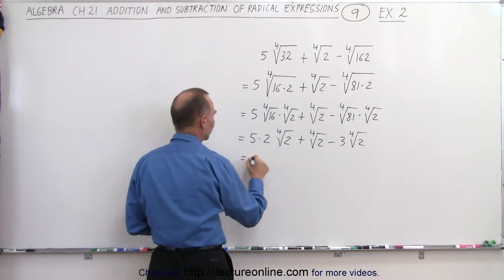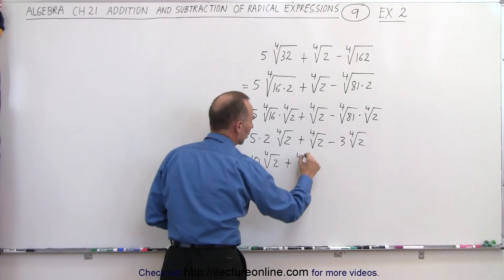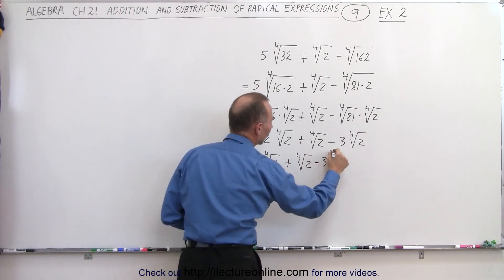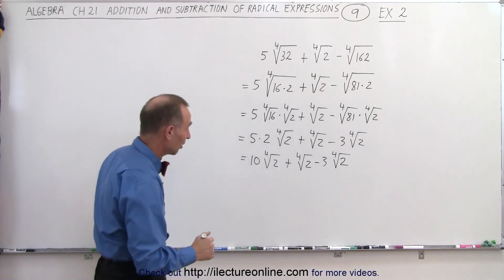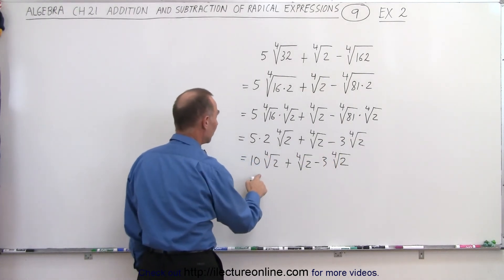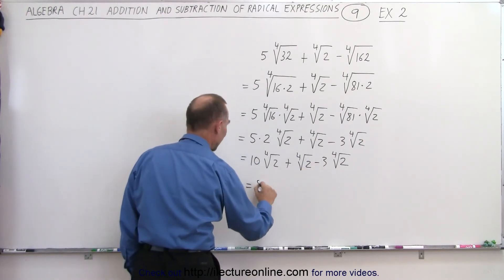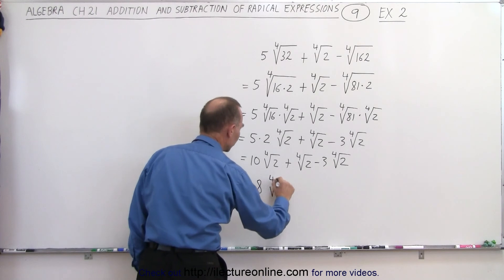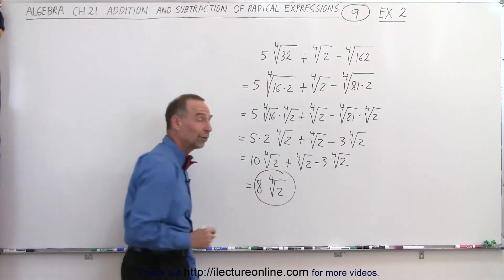Multiplying this together, this is 10 times the fourth root of 2 plus the fourth root of 2 minus 3 times the fourth root of 2. Wow. Those are all tongue twisters, aren't they? And now we can add them together because our radicals are all the same. So 10 plus 1 is 11 minus 3 is equal to 8 times the fourth root of 2. And that's the simplified form of our original expression.